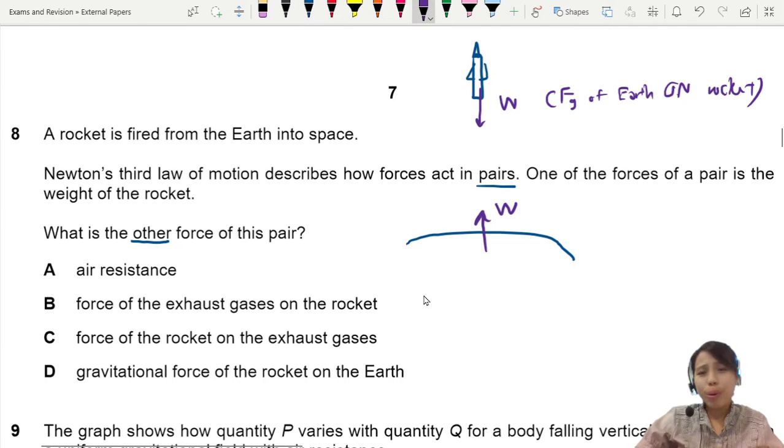We don't really call it weight, but we'll call it W anyway. This is the gravitational force of the rocket on the Earth.